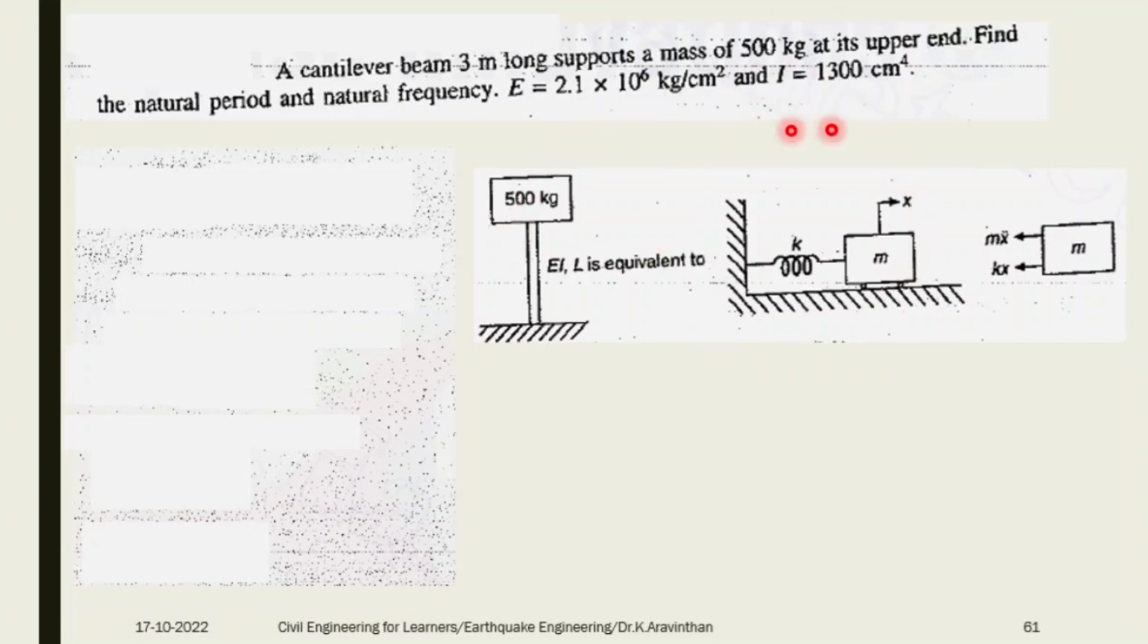You can detach this into a free body diagram. If the object is moving one side, two internal forces resist: mx double dot plus kx. How to find k? K equals 3EI by L cubed for a cantilever beam. K is known as stiffness, meaning force required to cause unit displacement. This is derived from slope deflection equation.